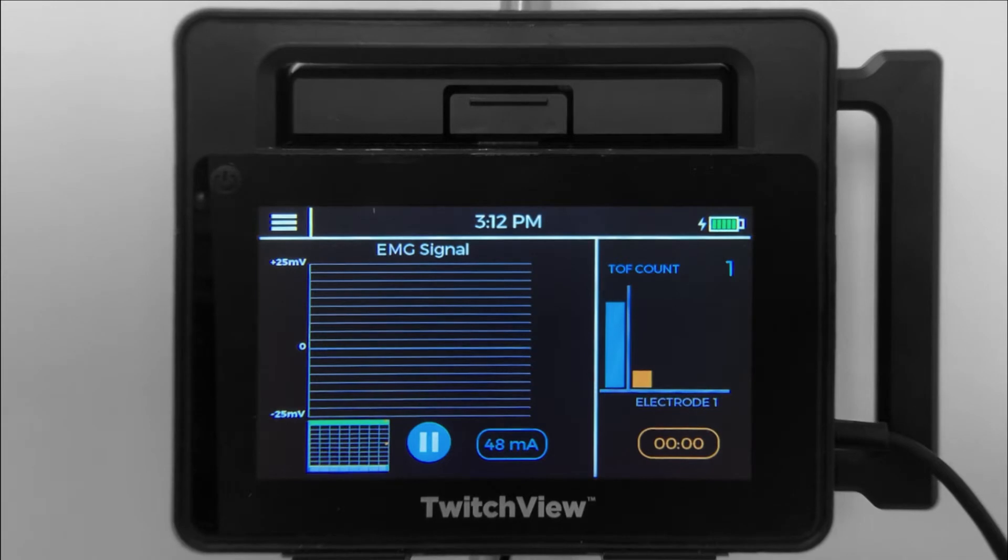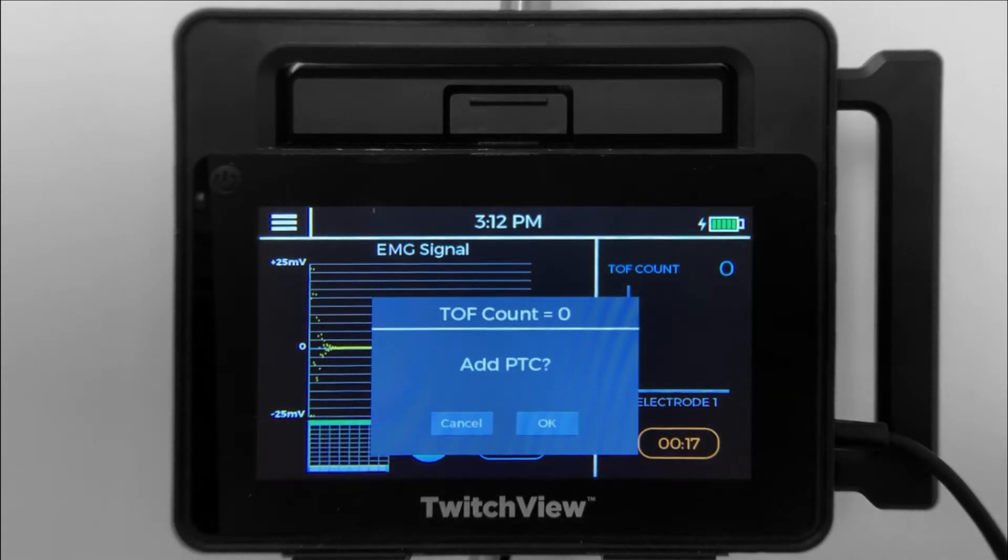If OK is selected, the system will automatically transition between TRAIN-4 and post-tatanic count modes according to the patient's level of paralysis for the duration of the case. If CANCEL is selected, the monitor will remain in TRAIN-4 mode.